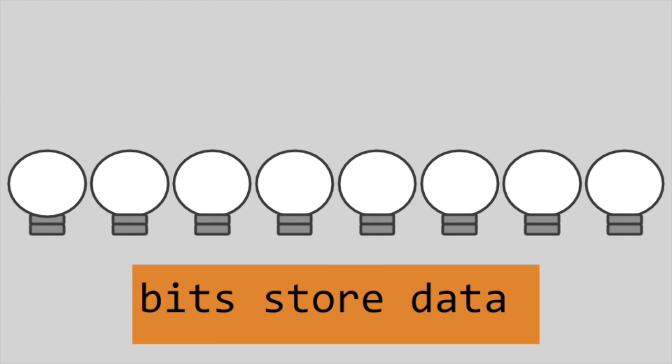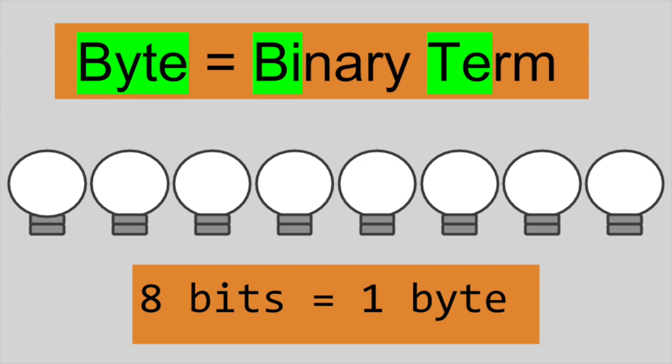From these simple bits, computers string together large sequences of ones and zeros to represent complex data and instructions. A string of eight bits is referred to as a byte. Byte is short for binary term.